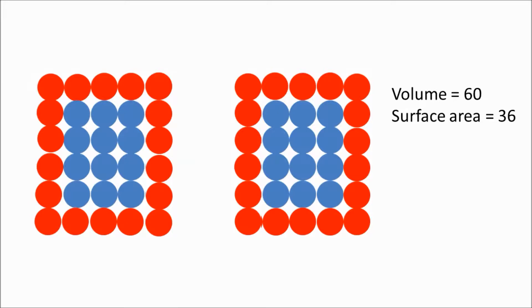So, by chopping something in half, we've kept the volume the same, but we've increased the surface area. And that means there can be more collisions, and this means the rate of reaction is faster.